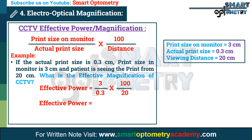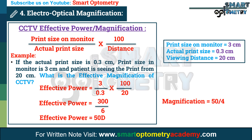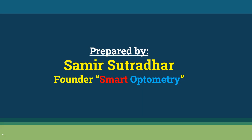Effective power = 300 divided by 6, or 50 diopters. We can easily identify the effective magnification by dividing the dioptric power by 4, so effective magnification = 50 divided by 4, or 12.5x. Stay with Smart Optometry and study optometry smartly.